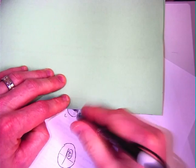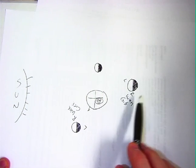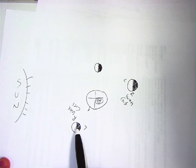That's waning and it's way more than halfway lit. Gibbous. So that would be where the position of the sun, the earth, and the moon would be to be a waning gibbous. This would be a waxing crescent.